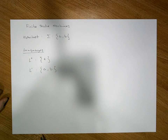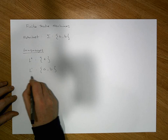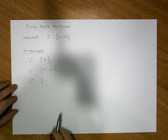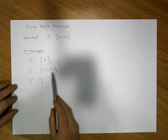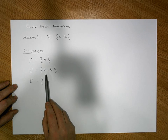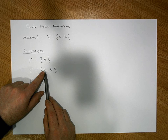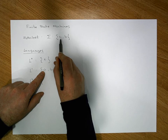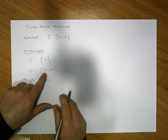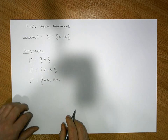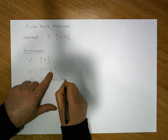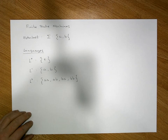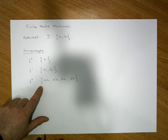The next stage up is the language L2, consisting of words of length two. Words of length two are formed by taking words of length one and concatenating another character. Starting with A: A followed by A gives AA, A followed by B gives AB. Starting with B: B followed by A gives BA, B followed by B gives BB. So L2 is a finite language with four words, each of length two.